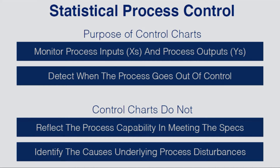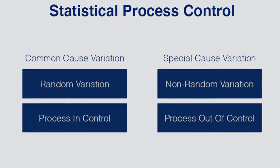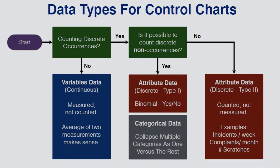Remember that control charts do not reflect the process capability in meeting specifications. Neither do control charts identify the underlying causes of disturbances that cause the process to go out of control. There are two types of variation: common cause variation, or random variation, during which the process is considered under control; and special cause variation, which is non-random variation that will knock the process off from its stability.